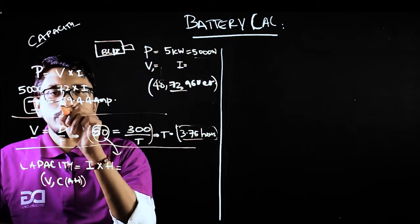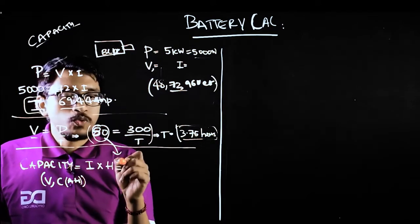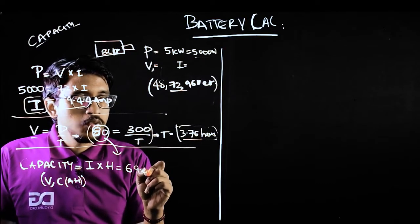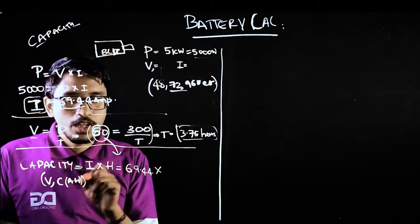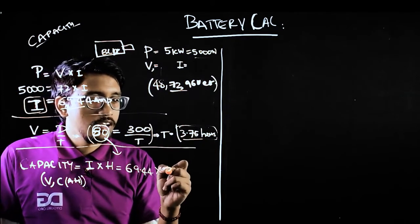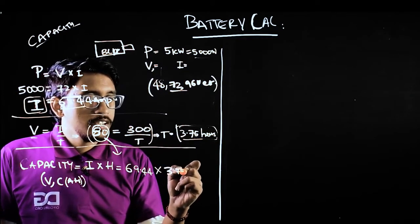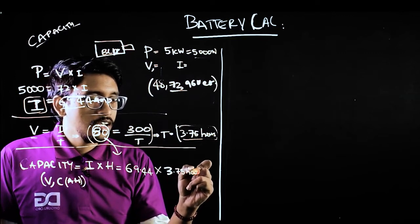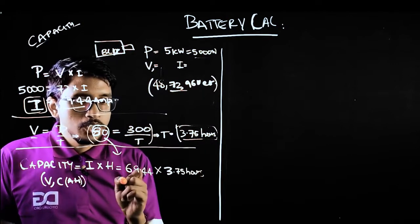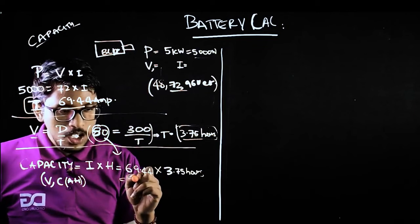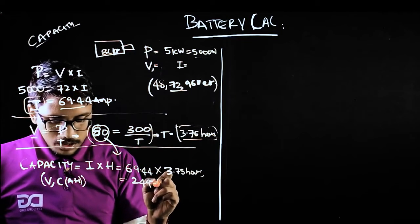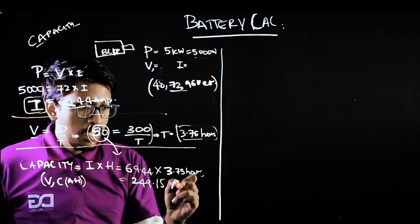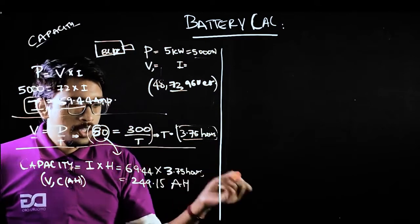We got 69.44 amperes. How much time will it take to travel? 3.75 hours. We are getting 249.15 ampere-hours.